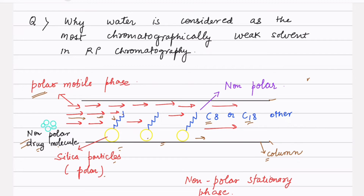Now we come to our question: why is water considered the most chromatographically weak solvent? The principle is simple — the stationary phase is nonpolar, the mobile phase is polar. When the nonpolar drug molecule goes through the column, it gets attached to the nonpolar stationary phase and resides there for a longer duration, so the retention time is very high.